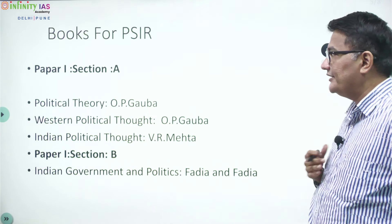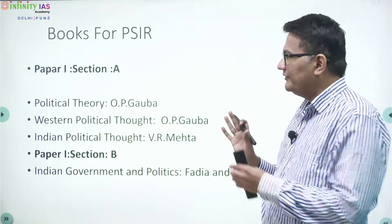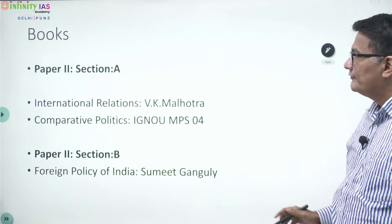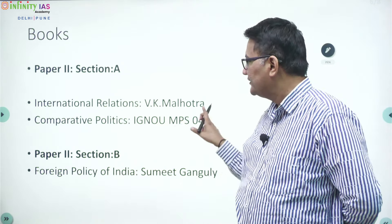Now comes the topic of which books to refer. Here is a minimum books list. For Paper 1, Section A — Political Theory: O.P. Gauba; Western Political Thought: O.P. Gauba; Indian Political Thought: V.R. Mehta. Section B — Indian Government and Politics by Fadia. Fadia is a very good book. For Paper 2 — International Relations: Palgrave Alothra; Comparative Politics: IGNOU notes MPS-4. For Section B — Foreign Policy of India by Sumit Ganguly.